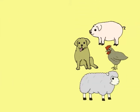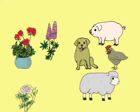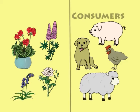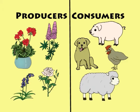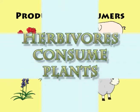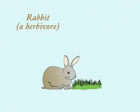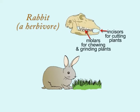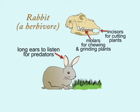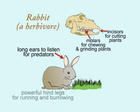Animals, like plants, are adapted to their habitats, but they are consumers rather than producers. Herbivores consume plants. For example, a rabbit has teeth adapted to cutting and chewing plants, long ears so it can listen for predators, and powerful hind legs for running and burrowing.